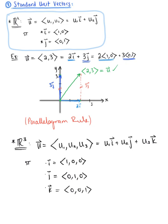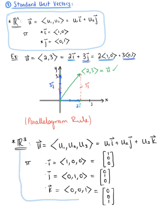Also be mindful that while we've given the vector component form here, we can also write these as column vectors. î is the column vector (1, 0, 0), ĵ is the column vector (0, 1, 0), and k̂ is the column vector (0, 0, 1). These are the standard unit vector forms for two and three dimensions.